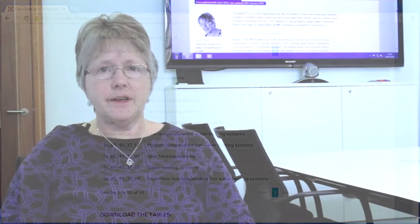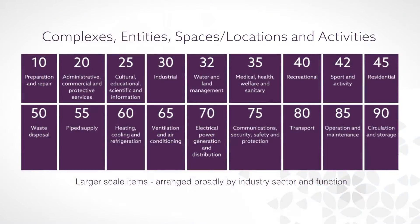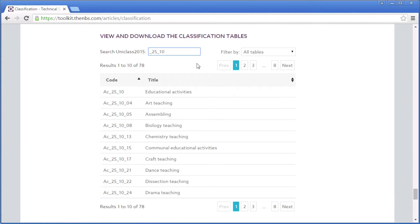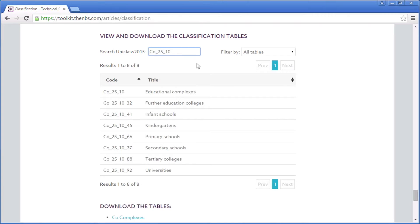Once you start using the tables, you'll find that several of them are arranged congruently. Looking at the complexes, entities, activities, and spaces location tables, you'll find that the group numbers for different sectors are the same throughout. This diagram shows what sectors or functions are covered by each of the groups. For example, if you look in the complexes table for an educational example, you'll find them under 25_10. If you then change that CO character to EN, you will find that the entities for education are there as well.